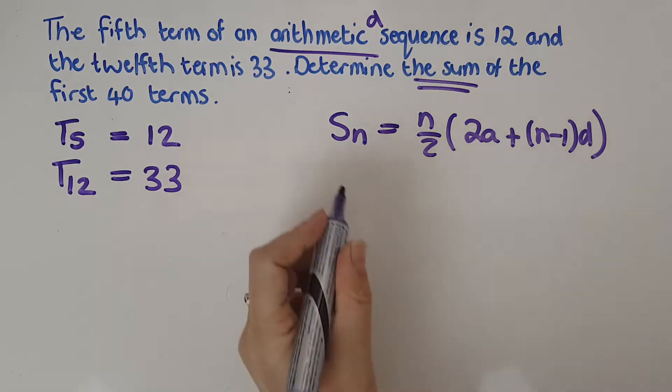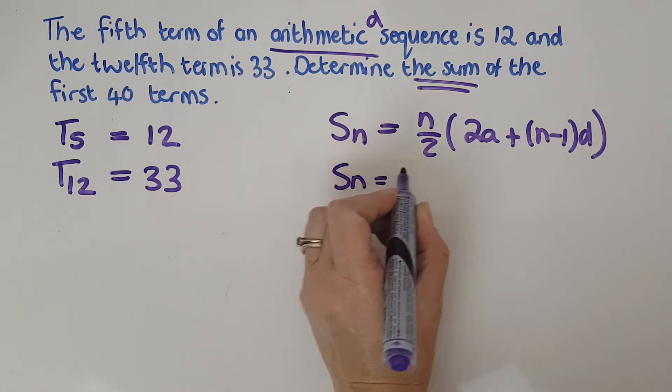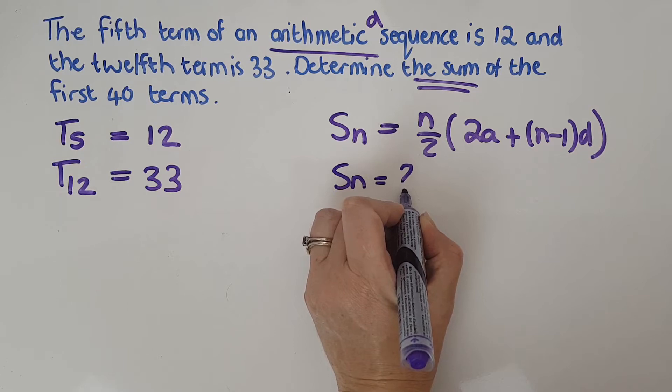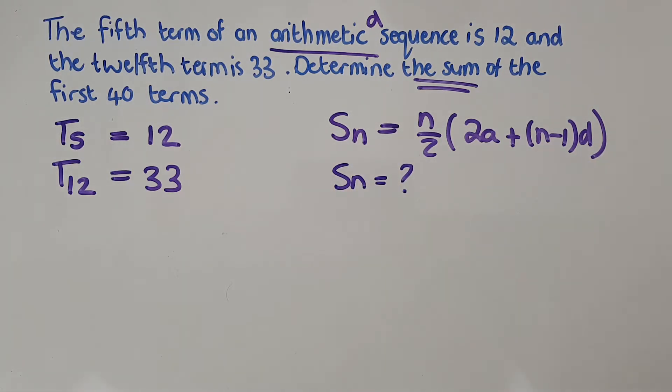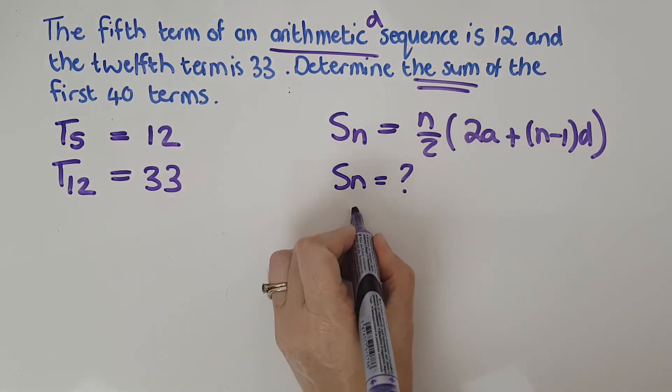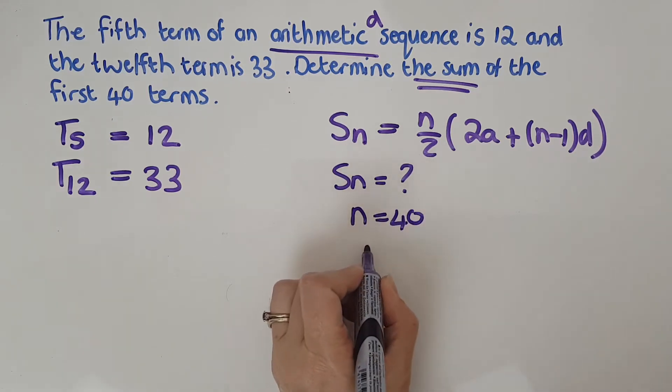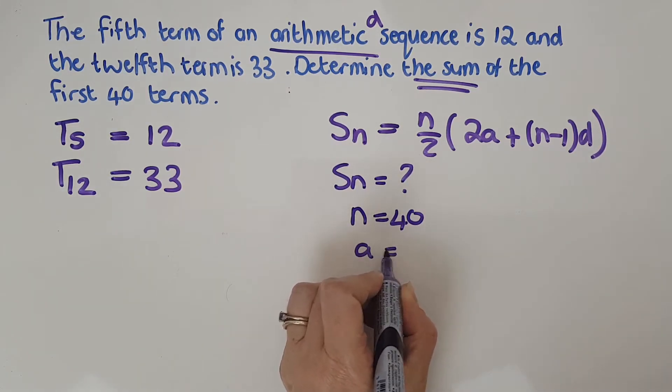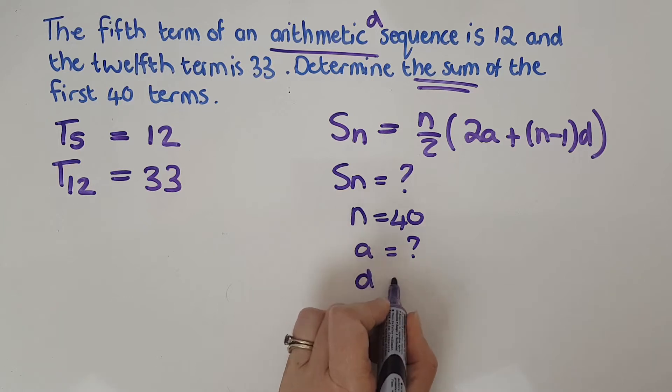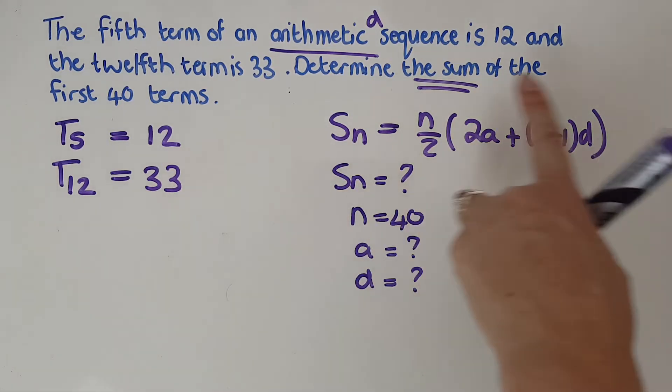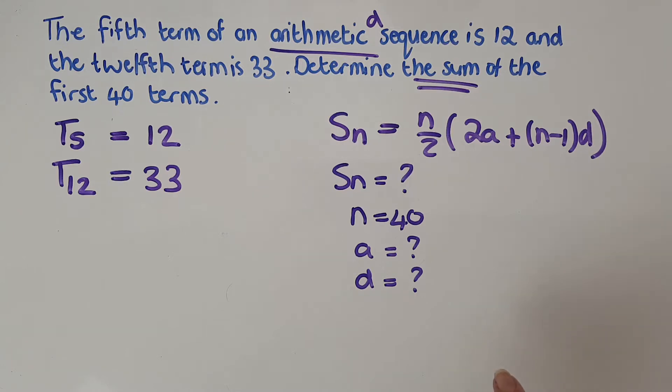I don't have Sn. Wait, I do have n—I've got 40, n is 40. Cool. a is don't know, d...